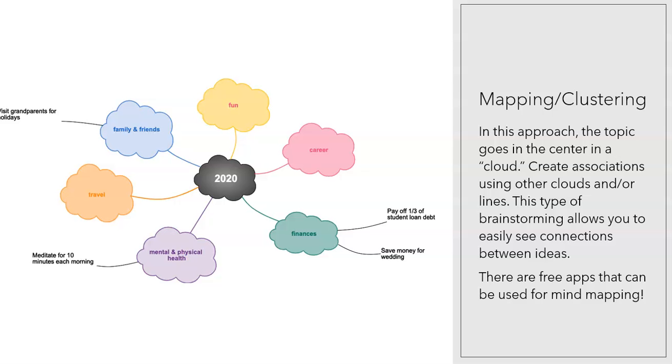In the mapping or clustering method, you start by putting the main idea in the middle in a cloud. If you are comparing or contrasting, you might decide to use two different mind maps, two different clusters, one for each character. Or you can do a mind map related to each characteristic that you think you might want to compare or contrast.